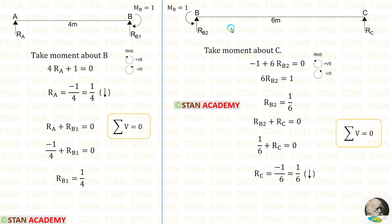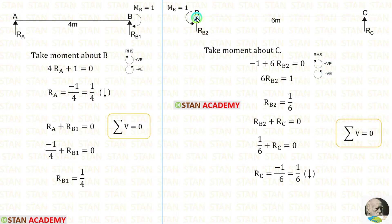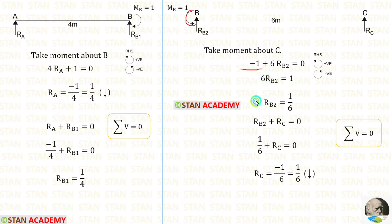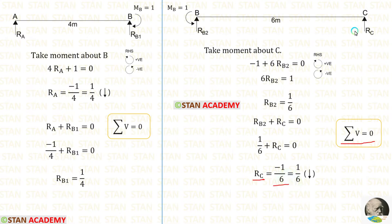Now let us calculate the reactions in beam BC. To calculate RB2, we take moment about C. Moving right-hand side, clockwise is positive, anticlockwise is negative. RB2 is acting towards point C in the clockwise direction, so it is positive, and the distance is 6 meters, giving 6·RB2. The moment MB is acting in the anticlockwise direction, so it is negative. Finally, we get RB2 equal to 1/6. Applying summation of vertical forces equal to zero, we can calculate RC. RC gives a negative value, meaning the assumed direction is not correct — RC is actually acting downwards.